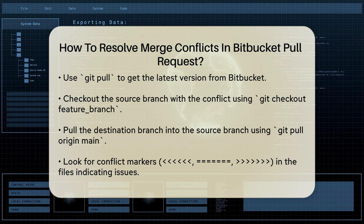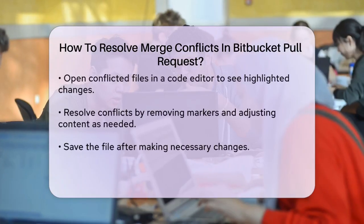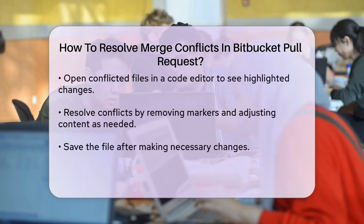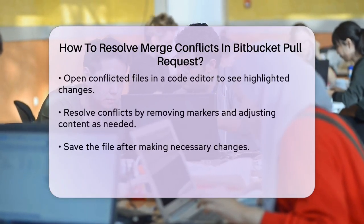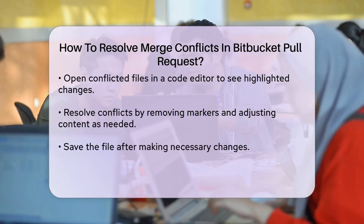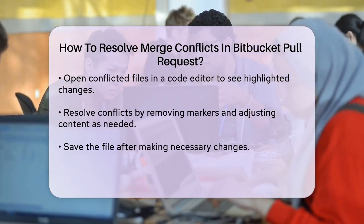When you merge the branches locally, you'll see conflict markers in the files where there are issues. Open the conflicted file in your code editor and you'll see these markers highlighting the conflicting changes.